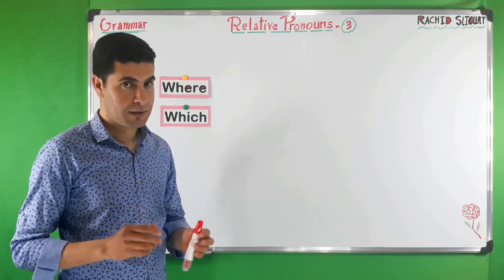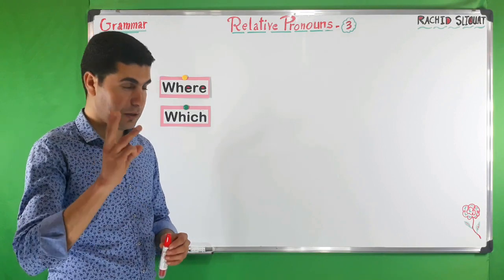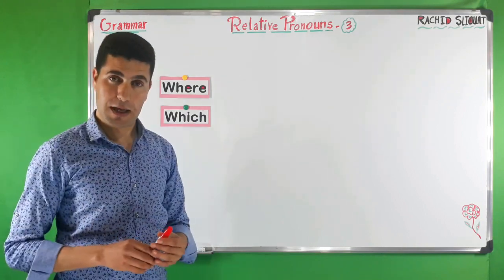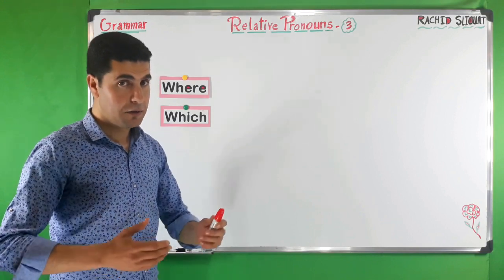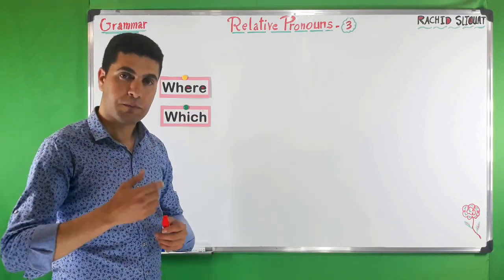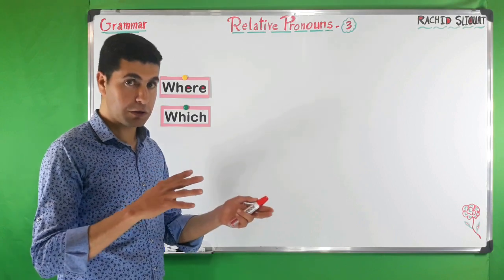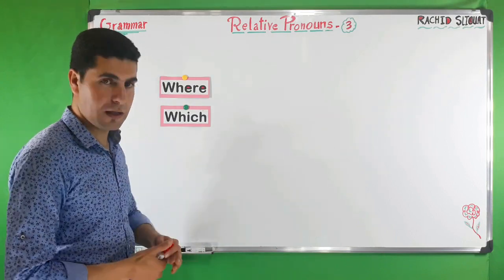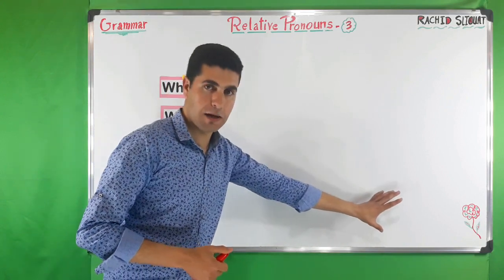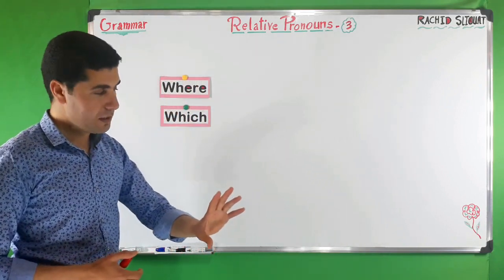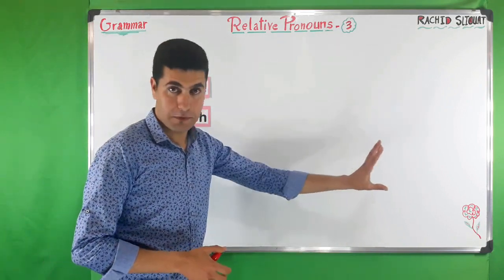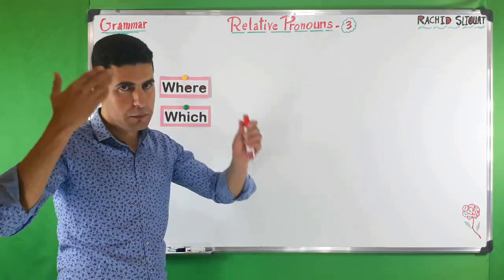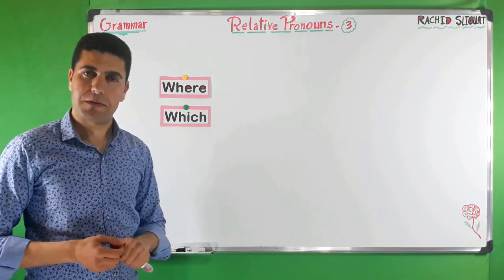Hello everyone, welcome again to my channel. This is the third episode about relative pronouns. In the previous episode we talked about the difference between who and whom. We said that who is always a subject and followed by a verb, and whom is always an object and followed by a subject.